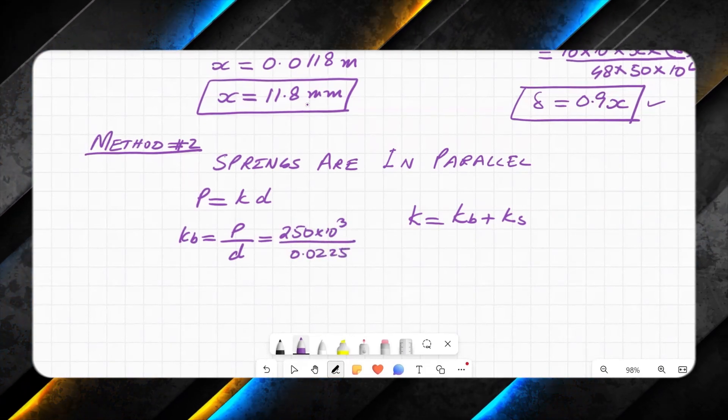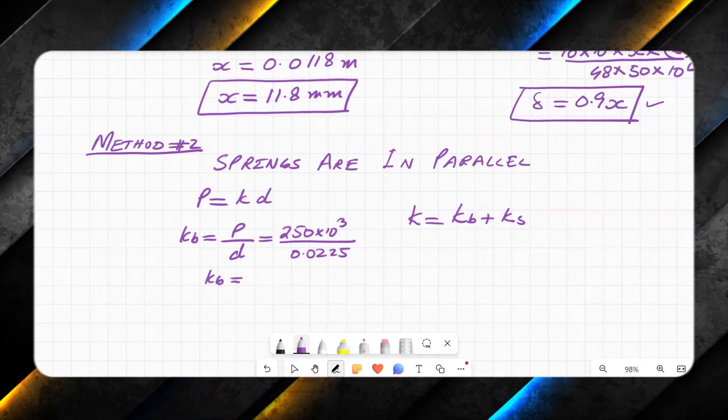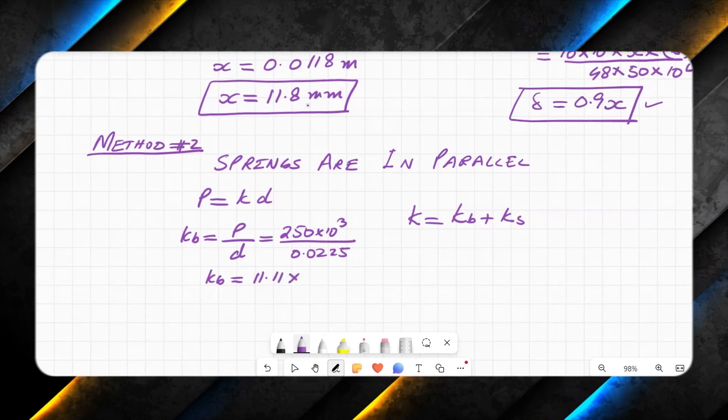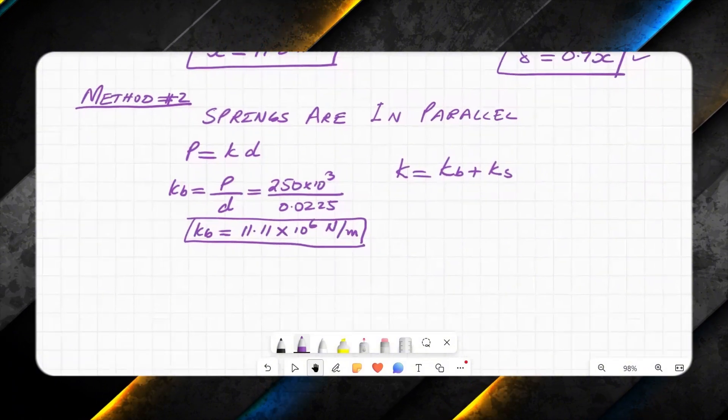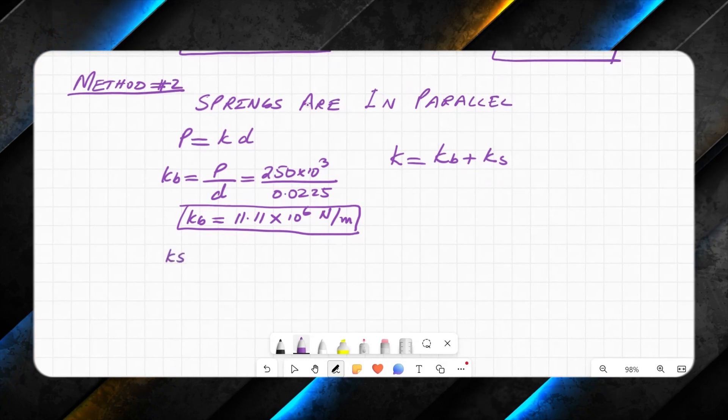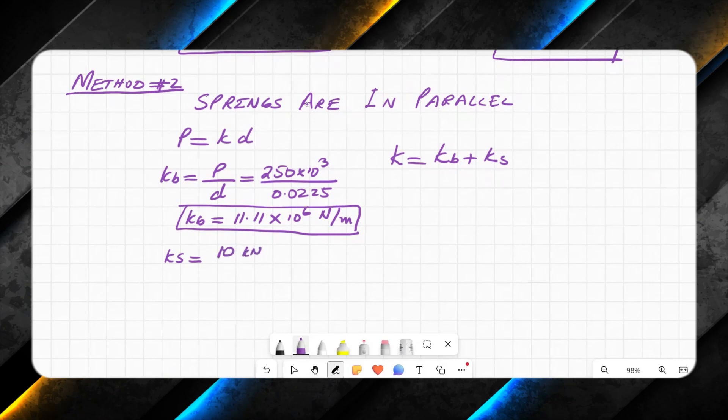And here for beam, kb will be equal to load divided by d. Load is 250 × 10³ divided by d, which is 0.0225. This will give me value of kb as 11.1111 × 10^6 newton per meter.